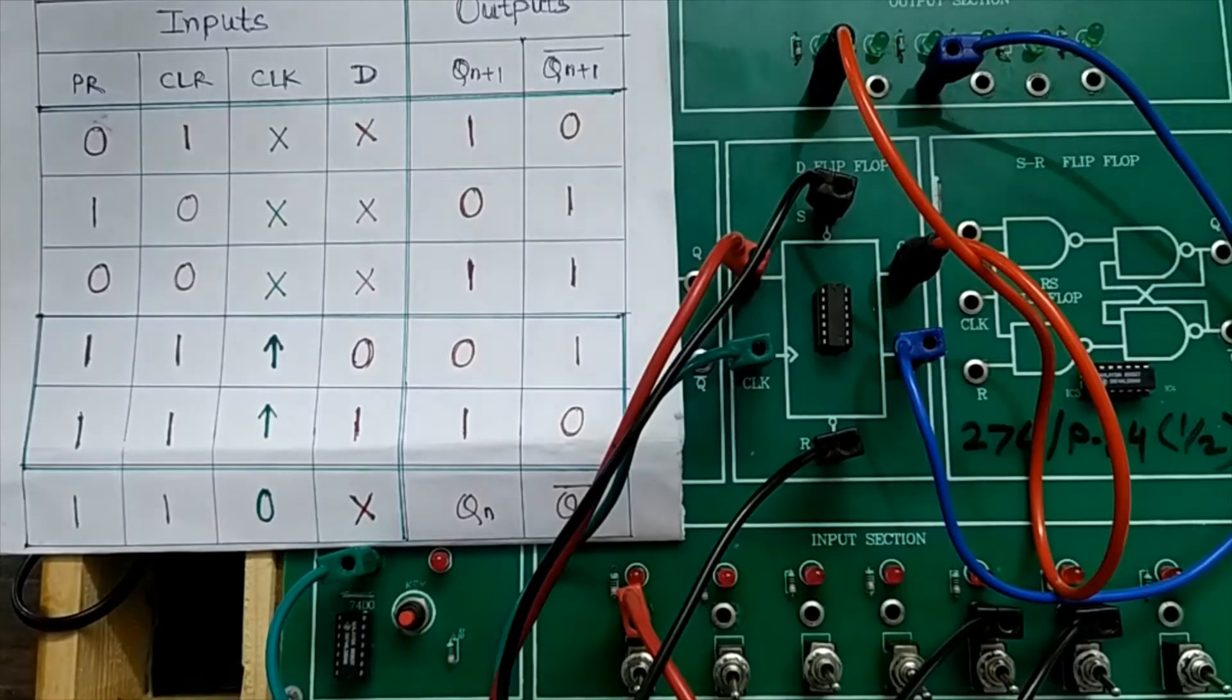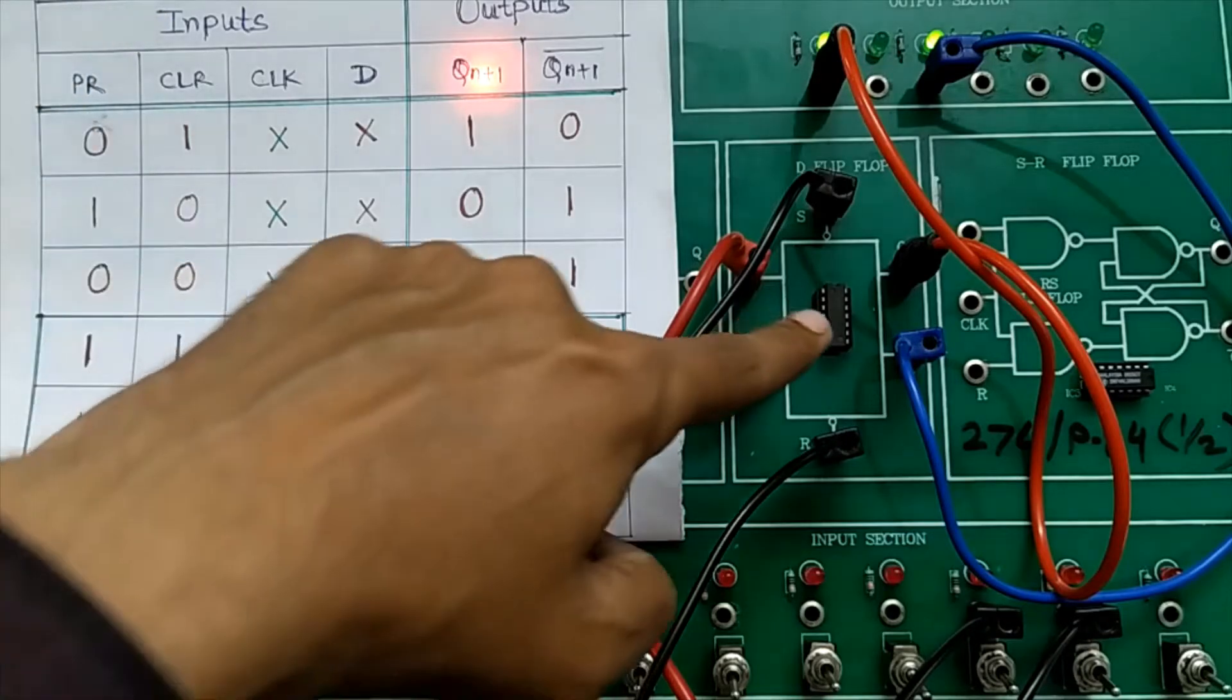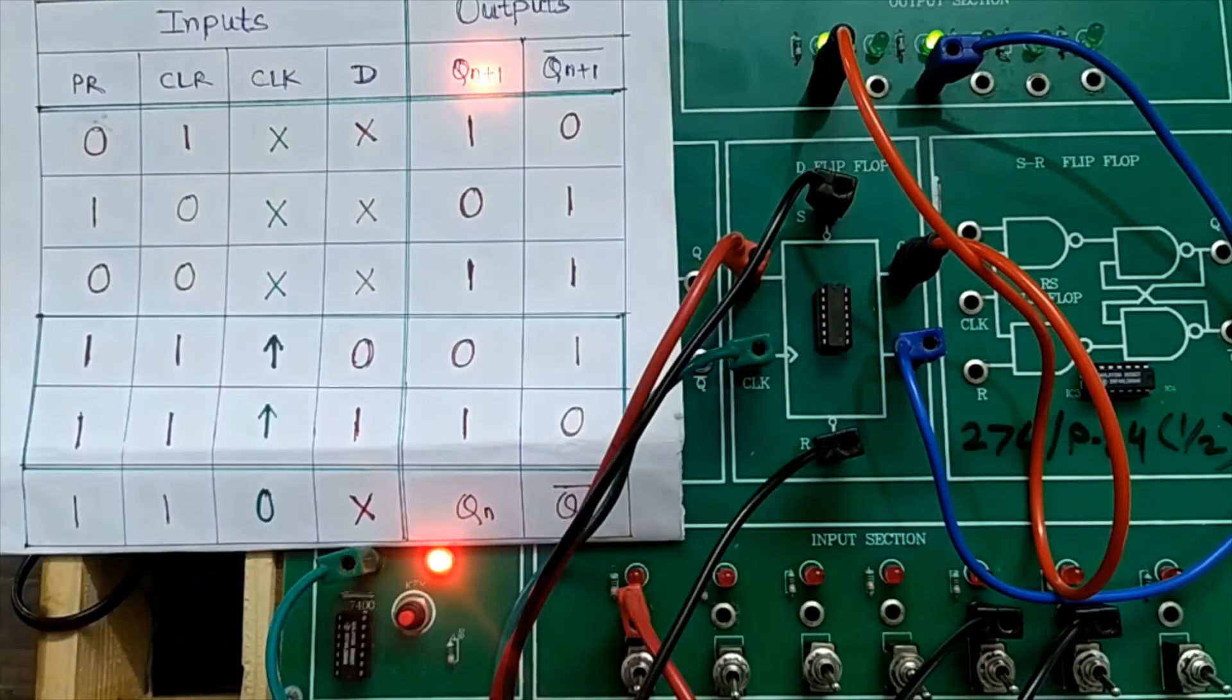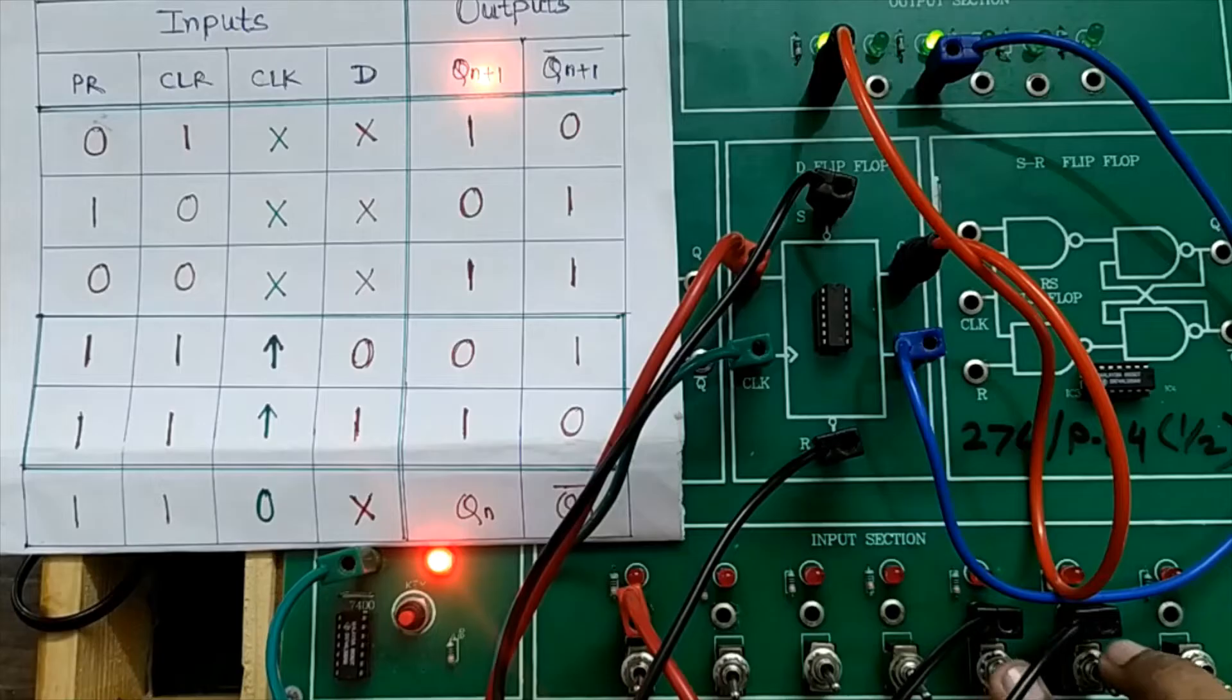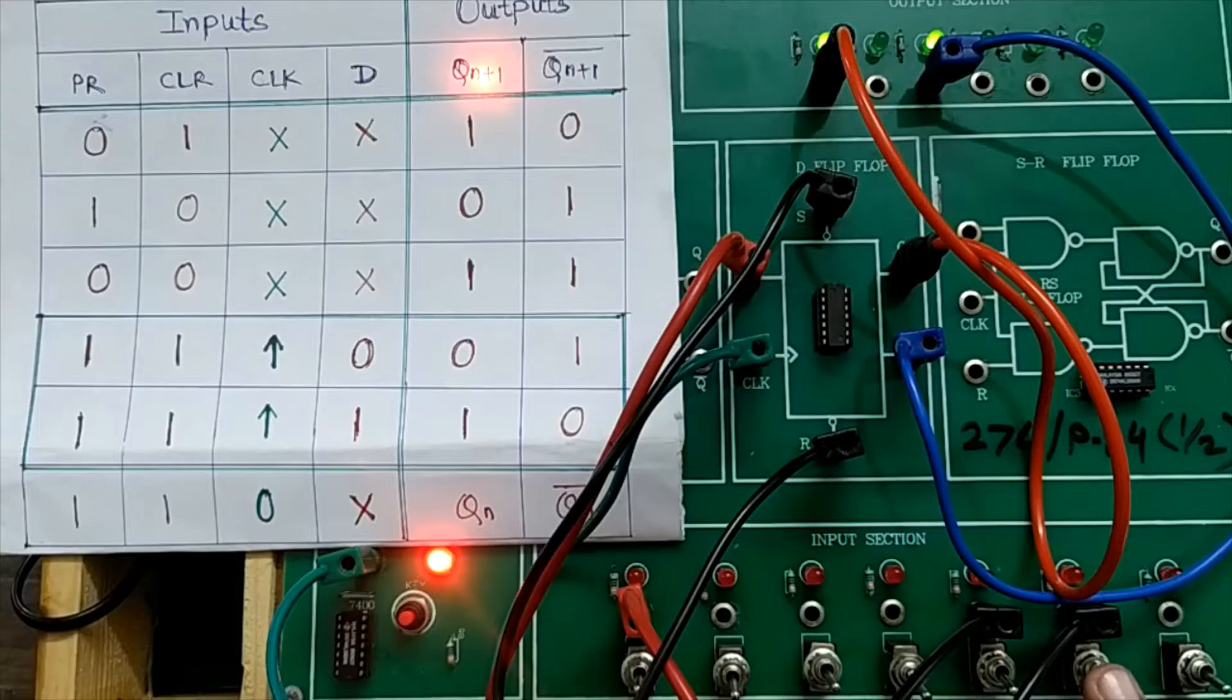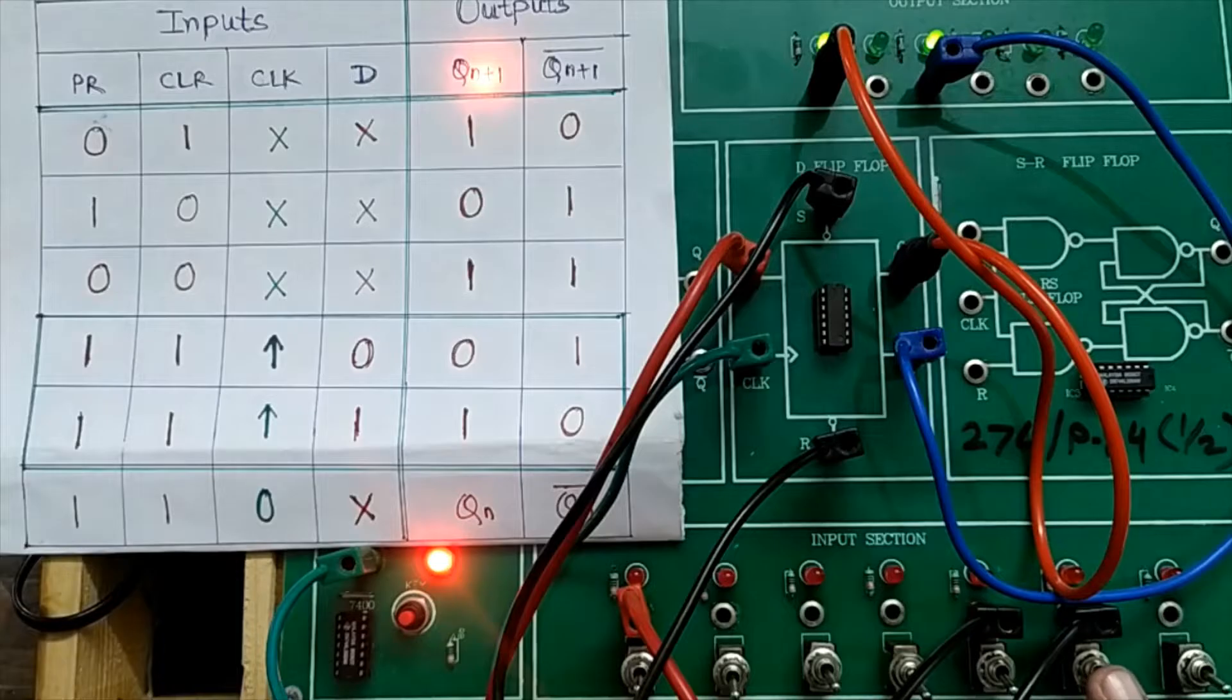I will turn on the power of the trainer kit. This shows the function table of IC 7474 which I have used as a D type flip-flop. This switch corresponds to D input of the flip-flop and these two switches correspond to preset as well as clear input. We will verify each row in the function table.